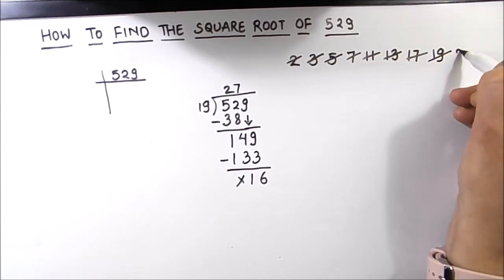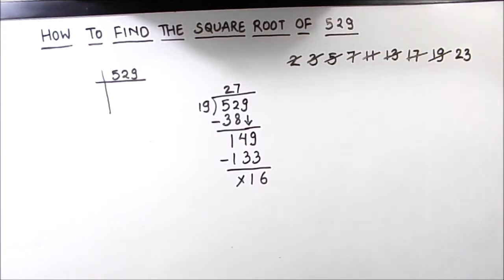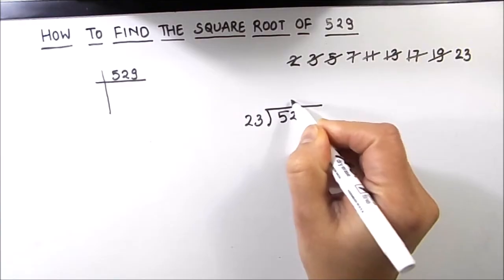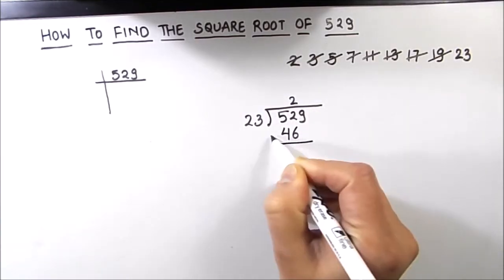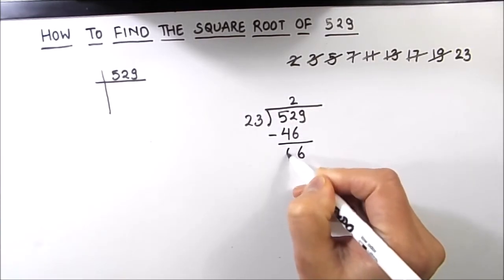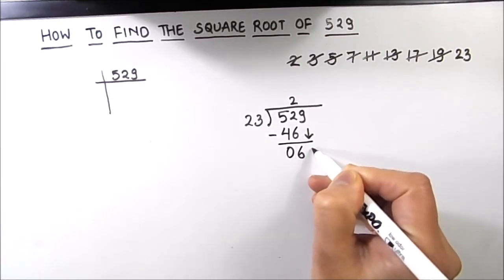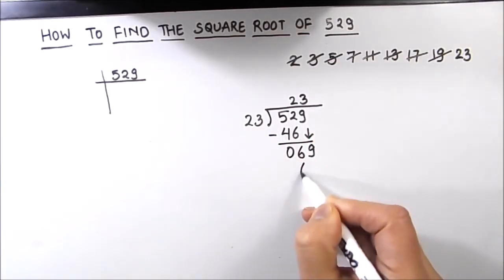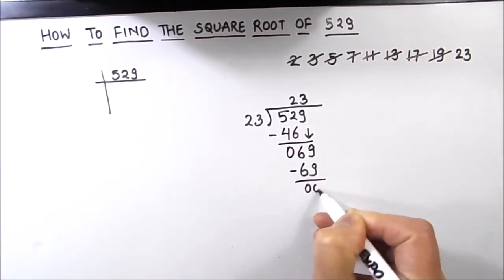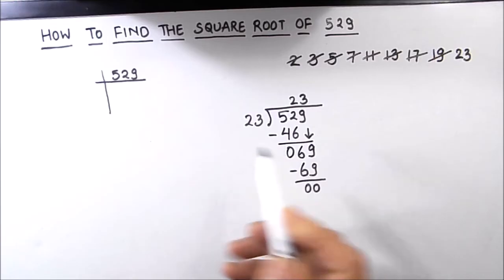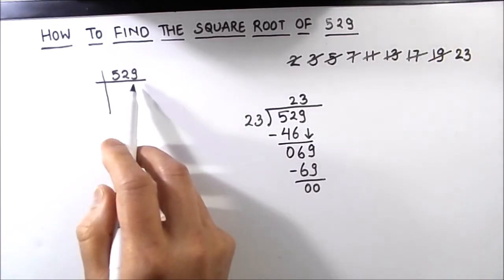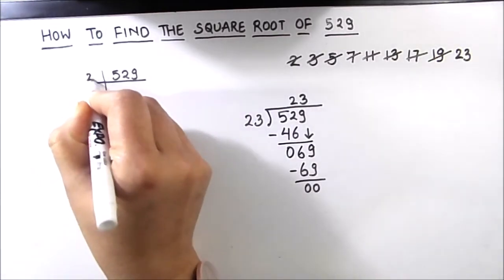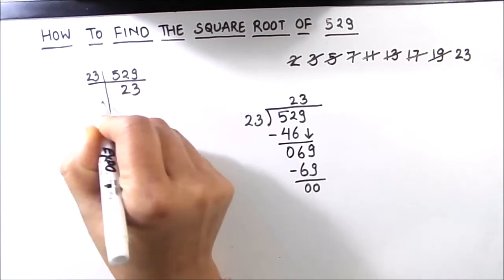The next prime number is 23. Let's try dividing 529 by 23. 23 times 2 is 46, remainder 6; dropping down 9 gives 69, and 23 times 3 is 69. So 529 is fully divisible by 23. The factor of 529 is 23, and 23 times 23 is 529.